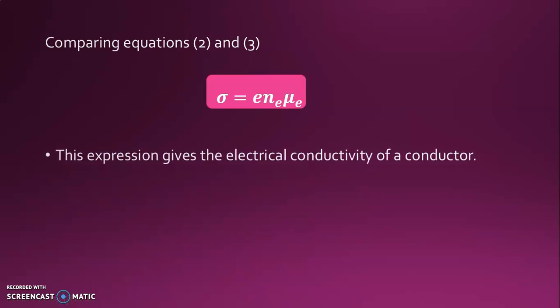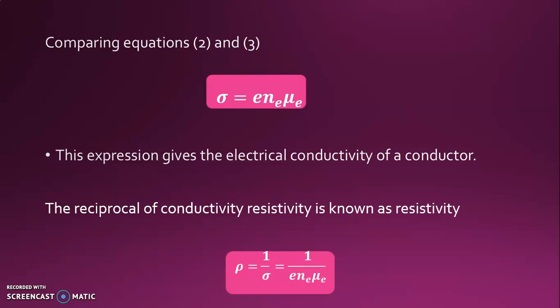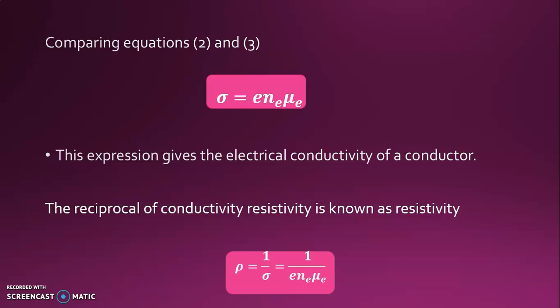This expression gives the electrical conductivity of a conductor. Since conductivity is known, we can find resistivity because resistivity is the reciprocal of conductivity. Resistivity rho (ρ) = 1 / σ = 1 / (e × N_xE × μ_xE). This covers electrical conductivity and electrical resistivity of a conductor or metal — conductivity gives the ability of the material to pass electric current, and resistivity shows how much the material opposes electric current.